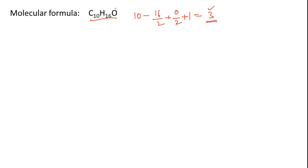Since oxygen is also present, it can be part of functional groups like C=O, ether, or OH. So 3 degrees of unsaturation could include C=C unsaturations. We need to perform chemical tests to verify which functional groups are actually present.